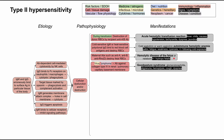Goodpasture syndrome is classically a type 2 hypersensitivity disease. It is sometimes triggered by a virus or lymphoma, but involves antibodies against collagen type IV, which is present in the kidney as well as the lungs — specifically against the capillary basement membrane. So you have anti-basement membrane antibodies. Symptoms include glomerulonephritis on urinalysis, oliguria or anuria, hemoptysis, and dyspnea or shortness of breath.